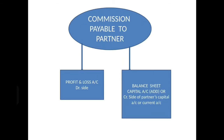Next, commission payable to partner. Suppose it is there in the partnership deed that a certain amount of commission is to be paid to a partner — then it has to be honored. Commission payable to partner is an expense of business, so it goes to profit and loss account debit side. The other effect is partner's capital account or current account credit side. Eventually, partner's capital account or current account will appear in the balance sheet.